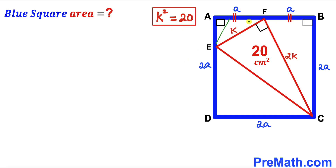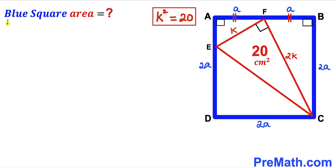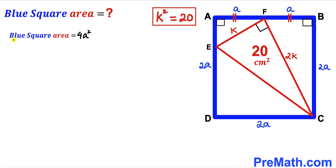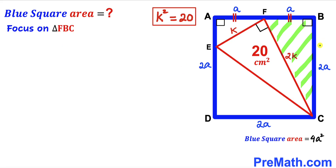Now we focus on the blue square ABCD to calculate its area. Recalling the area of a square formula: area equals S², where S is the side length. The side length is 2a, so the blue square area equals (2a)² equals 4a². Our task is now to find the value of A² to compute this area.